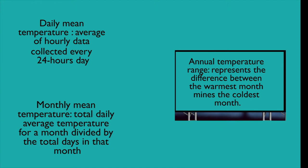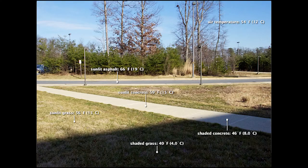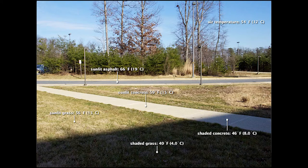Pay attention to this picture where you see at the same day, at the same time, different surfaces represent different temperatures. For example, the air temperature is 54 degrees Fahrenheit, but the asphalt is 66, the concrete 59, the shade concrete is 46, the grass is 40, and in sunlight, the grass is 56. Each element absorbs or reacts to the sun radiation based on its own characteristics.